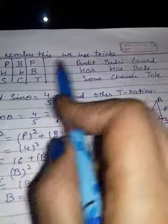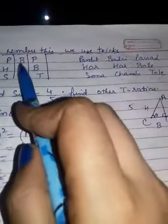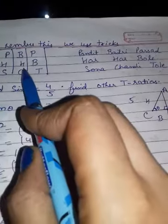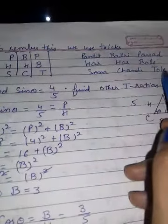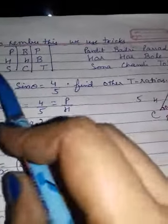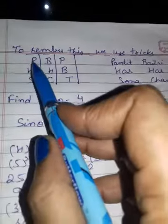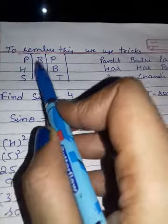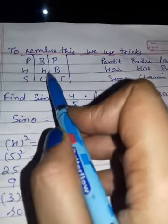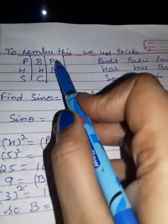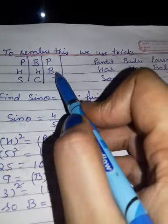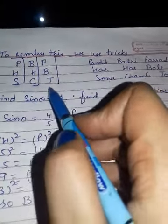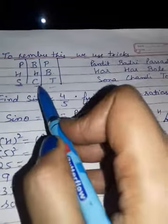P from Pandit, B from Badri, P from Prasad, H, H, B. So the letters are P, B, P, H, H, B — where P is perpendicular, H is hypotenuse, and B is base. Then S, C, T — Sona, Chandi, Tole — represent Sine, Cos, Tan.